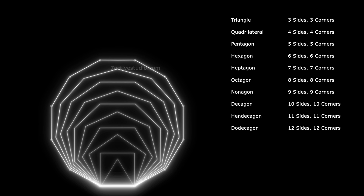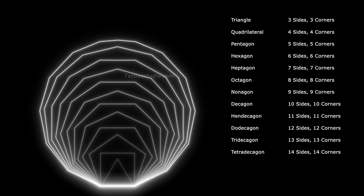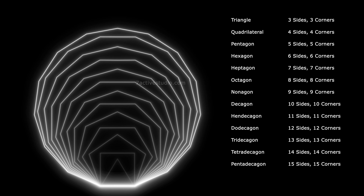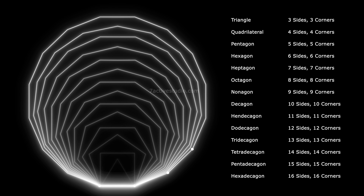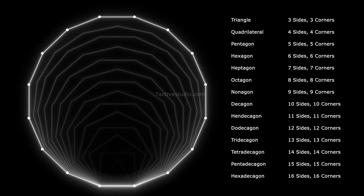Tridecagon: thirteen sides, thirteen corners. Tetradecagon: fourteen sides, fourteen corners. Pentadecagon: fifteen sides, fifteen corners. Hexadecagon: sixteen sides, sixteen corners.